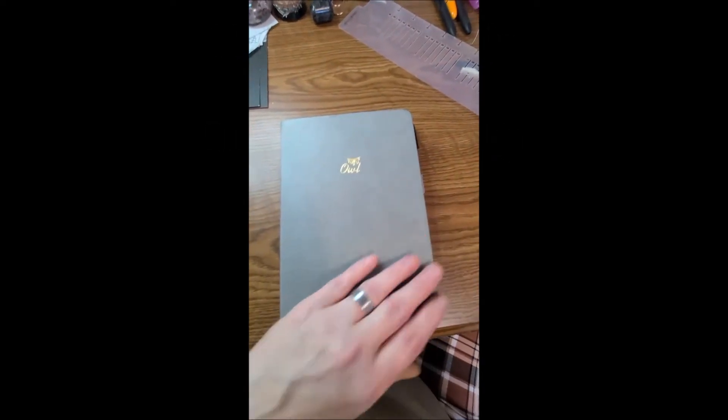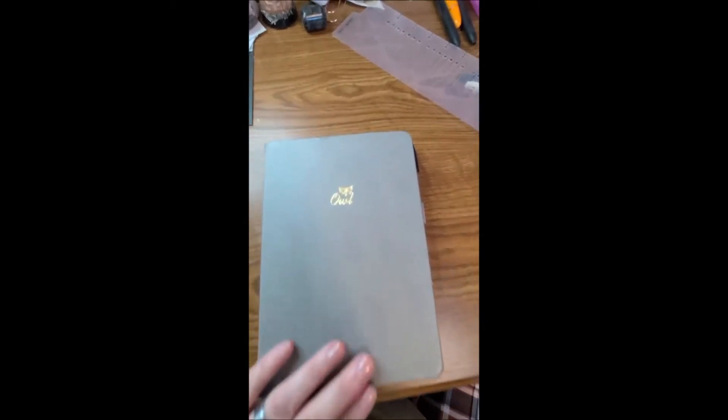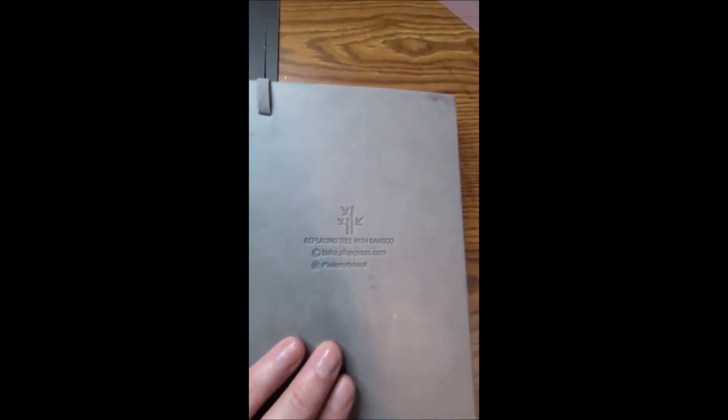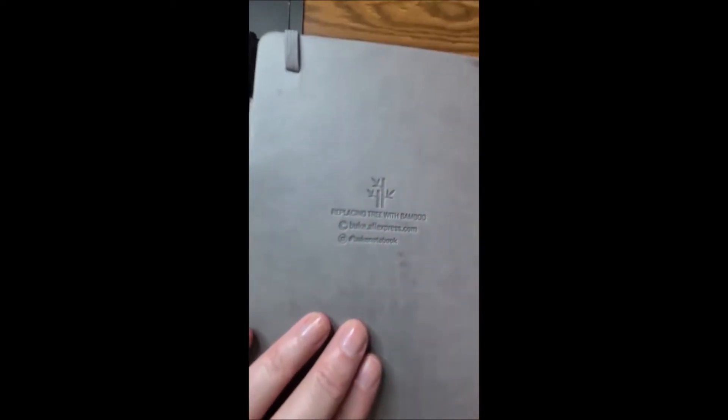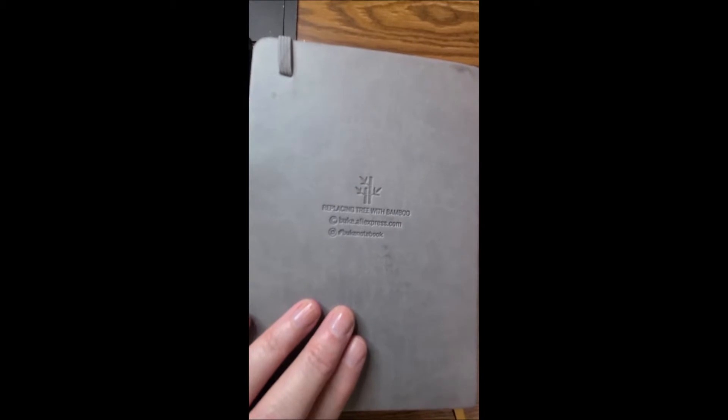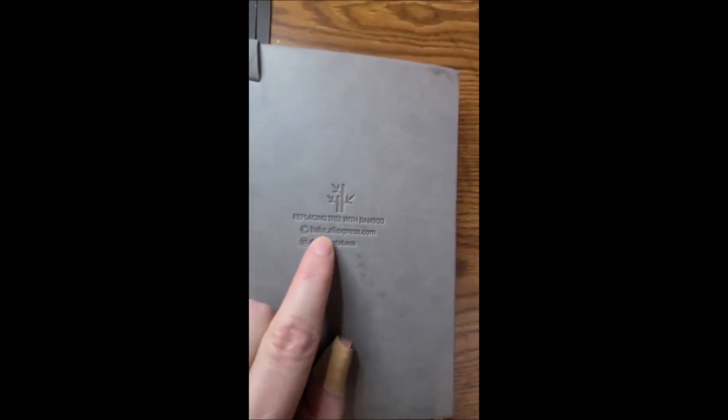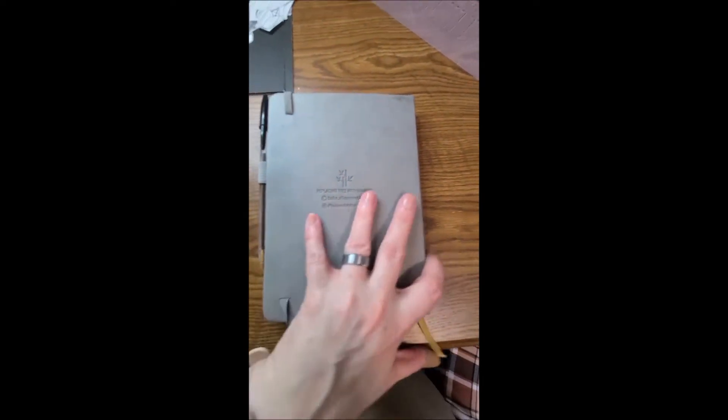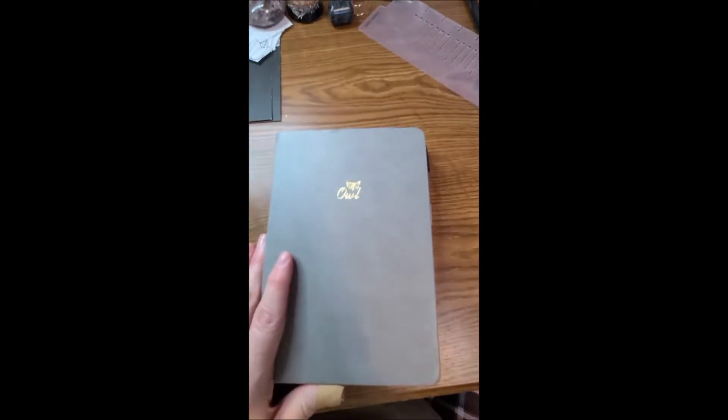Okay, here we go. I'm gonna start with my September journal. It says owl on the back here, replacing tree with bamboo, and it's by Buke from aliexpress.com. I got it from Amazon because I thought the owl was cute.